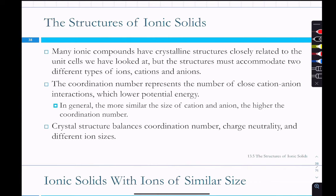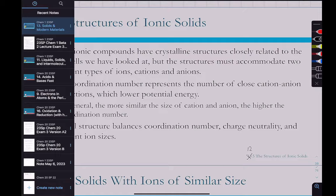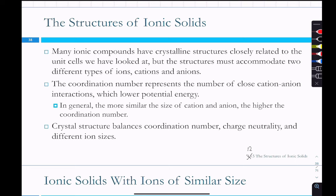Structures of ionic solids. This is chapter 12 in your book. Many ionic compounds are crystalline structures closely related to the unit cells we looked at. They have to accommodate two different types of ions, and depending on different charges and the sizes of those ions, they form different structures.